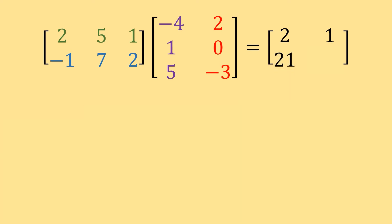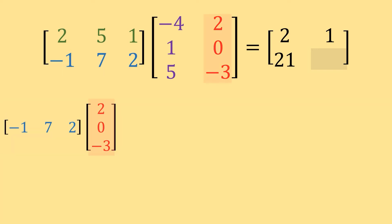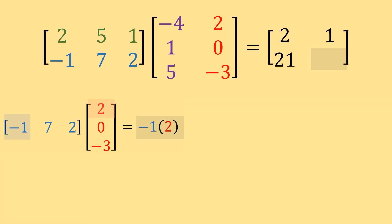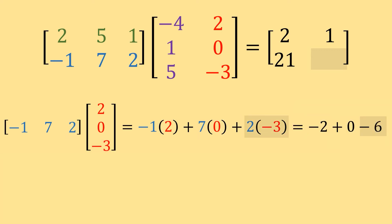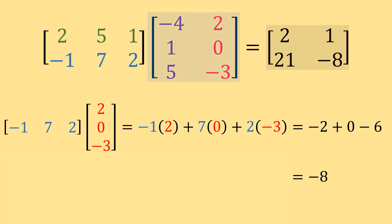So 21 goes in row 2, column 1 of our result. Finally, for row 2, column 2, we use row 2 from matrix A times column 2 from matrix B: negative 1, 7, 2 times 2, 0, negative 3. That gives negative 1 times 2 plus 7 times 0 plus 2 times negative 3, which equals negative 2 plus 0 minus 6, which equals negative 8. So negative 8 goes in position 2, 2. The result of matrix A times matrix B is the matrix 2, 1, 21, negative 8.